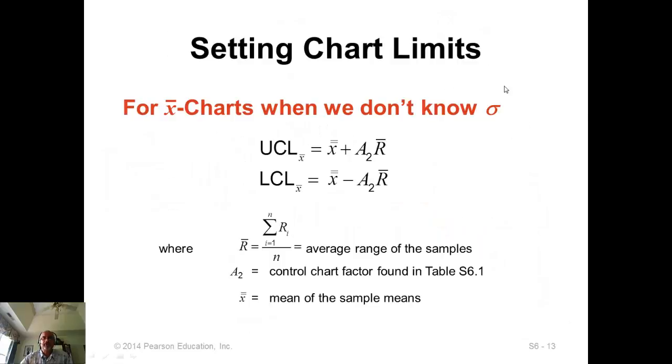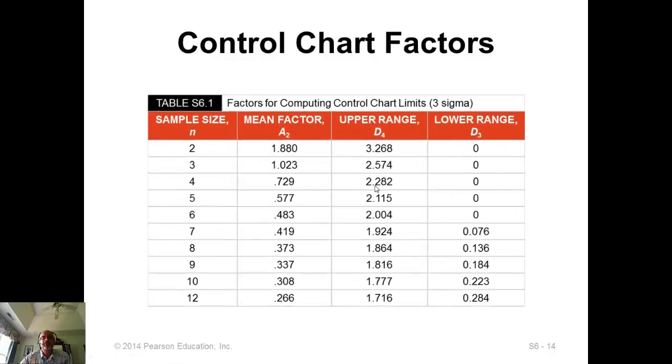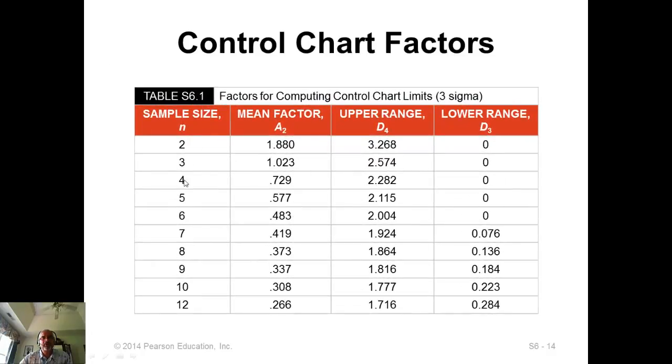Now, if sigma is unknown, and this is the case in most instances, sigma being known is not quite common, then you don't have sigma, so you have to use R-bar in its place, R-bar being the mean range. But when you do that, you have to use a factor called A sub 2. And this A sub 2 comes from a table in your book, table S6.1. So for different sample sizes, you have the factor A sub 2. For us, sample size was 9, so factor is 0.337. And you also have the factors for R chart, which is D sub 3 and D sub 4, which would be these two numbers, respectively.